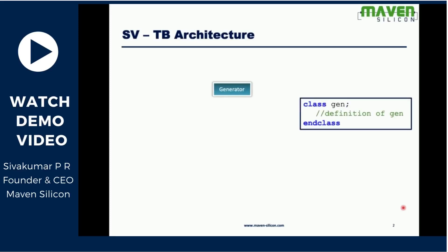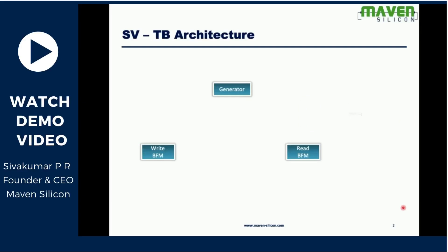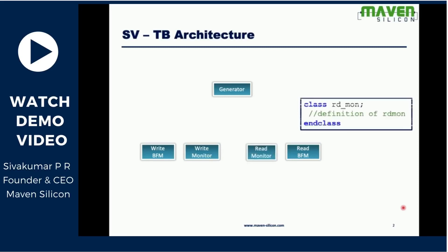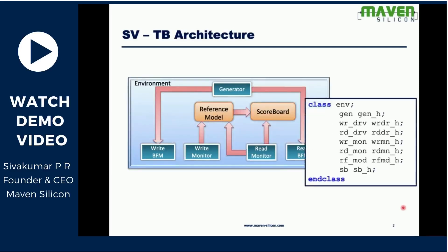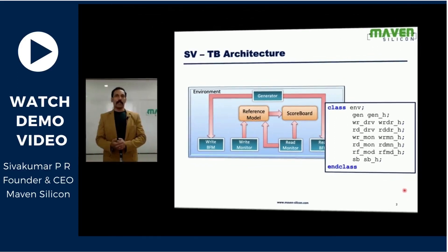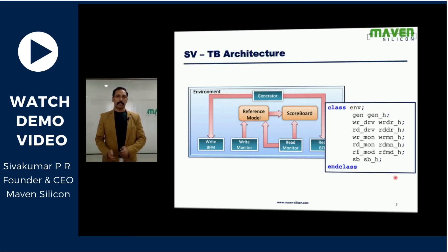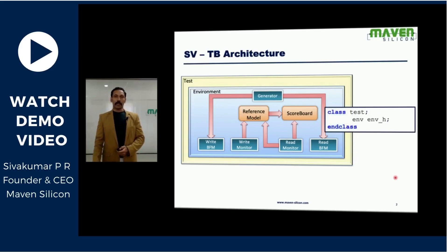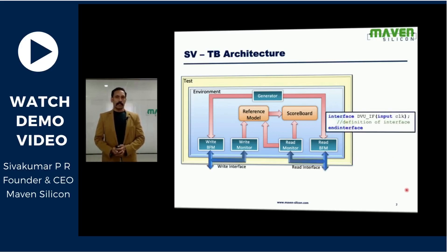Every component will be created using the class data type. Generator is a class, driver is a class, read driver is a class, write monitor is a class, reference model is a class, and scoreboard is also a class. This is how we instantiate all the lower-level components as objects in the top-level environment. The top-level environment is also a class — classenvnclass — and the test case is also going to be a class. We use an interface to connect the environment with the DUT.